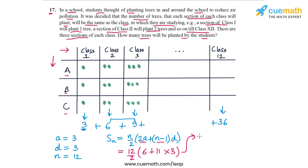This is equal to 12 by 2 is equal to 6. So 6 into 6 plus 11 into 3. 11 into 3 is 33. 33 plus 6 is 39. So we get 39 into 6, that is equal to 234. So in total, the students of grades or classes 1 to 12 will plant a total of 234 trees. So the answer to this question is 234.